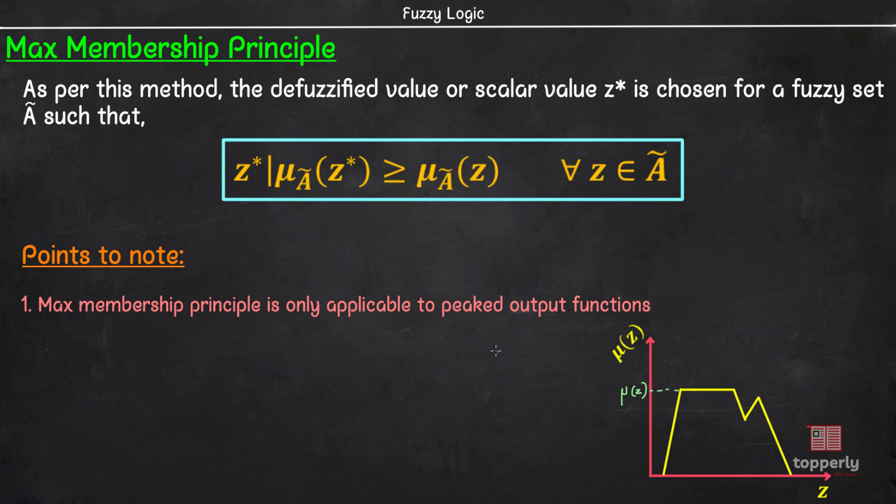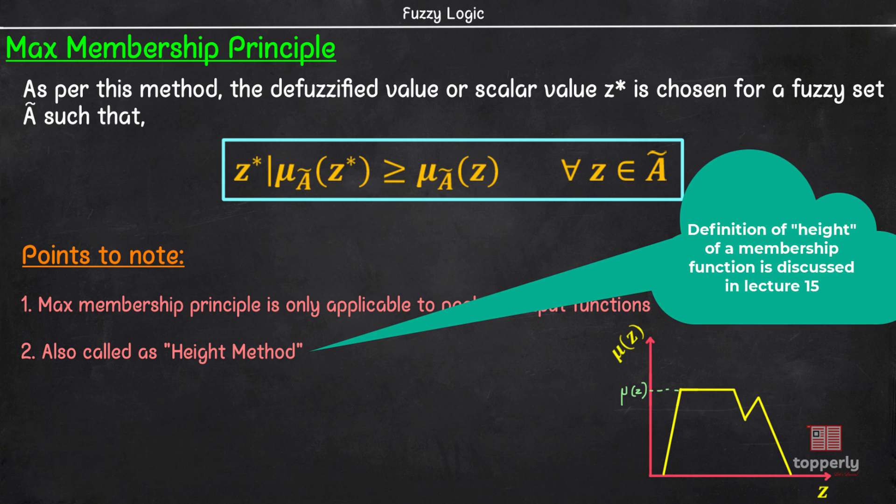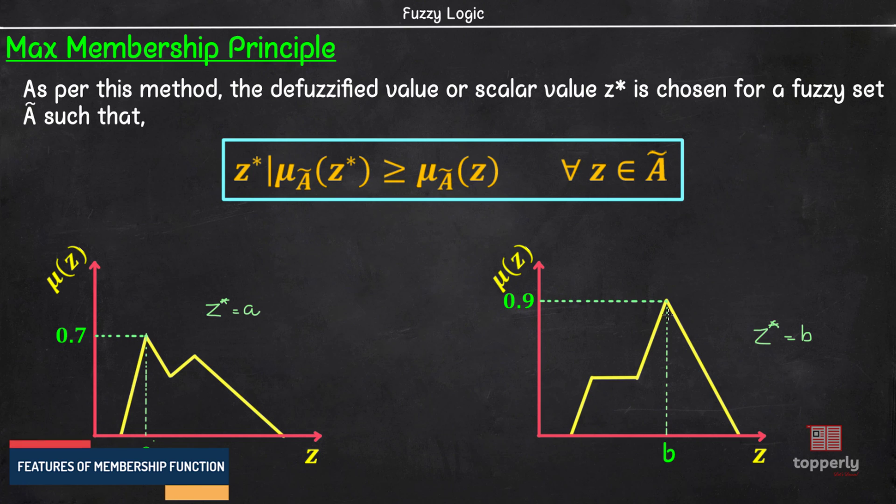That is why max membership method is limited to peaked output functions. Second point is that max membership principle is also called height method as you are essentially finding the height of the membership function to get the defuzzified value z*.